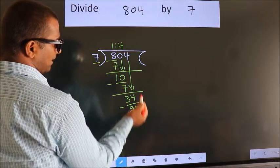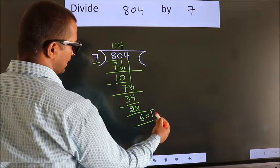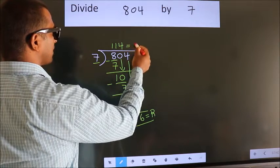No more numbers to bring down. So we stop here. This is our remainder. This is our quotient.